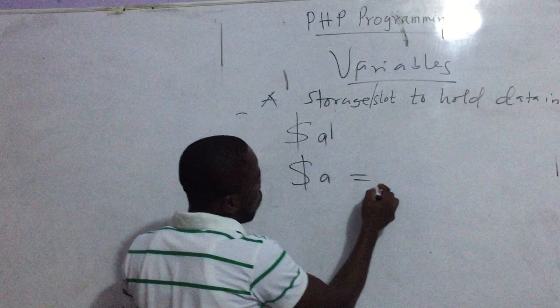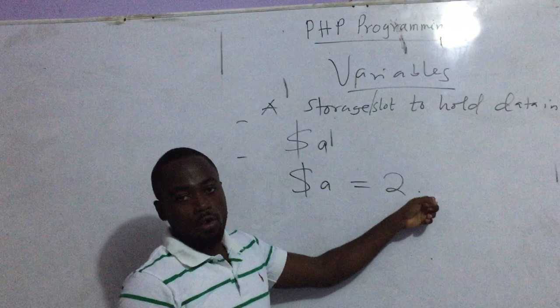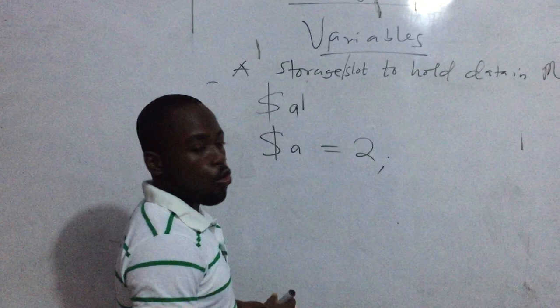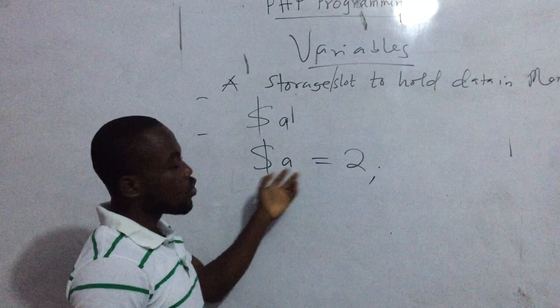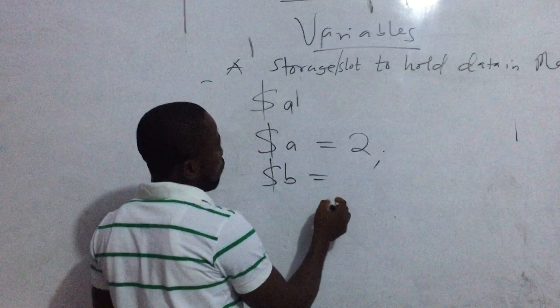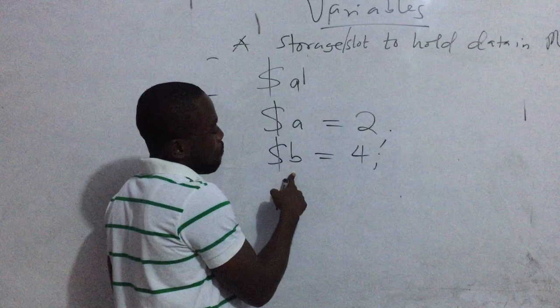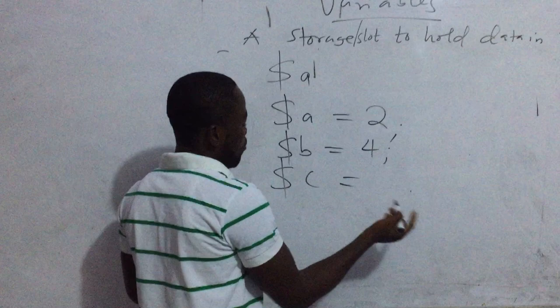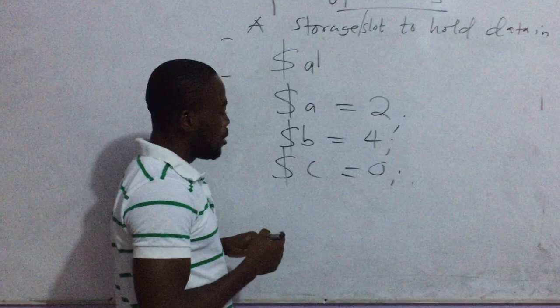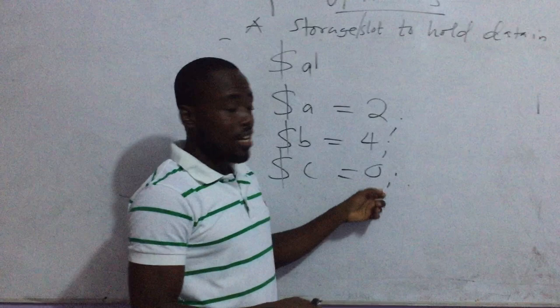All PHP statements are terminated with a semicolon. So when we say $a, $a is the variable and the value of A is 2. When we say $b = 4, the name of the variable is B and the value of B is 4. If you are doing simple arithmetic with $c, you first declare $c as zero. If you don't initialize C, $c becomes null by default in memory.